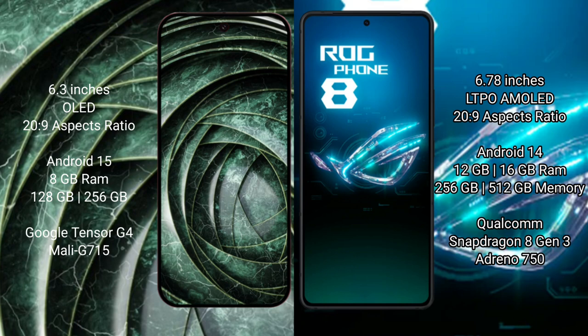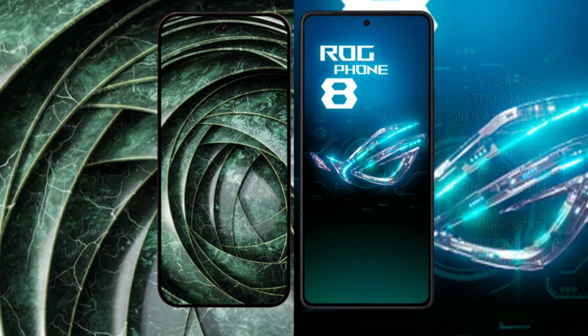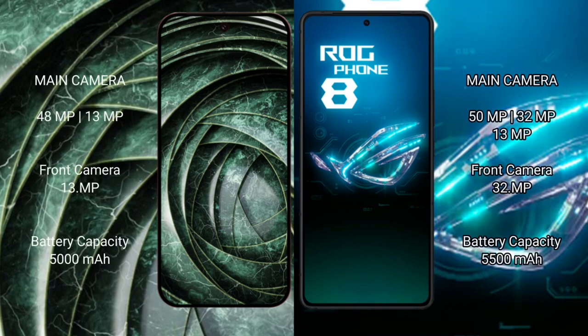The ASUS ROG Phone 8 comes with 12GB or 16GB RAM and 256GB or 512GB of internal storage, powered by the Snapdragon 8 Gen 3 processor. The Google Pixel 9a features a dual camera setup with a 48MP main camera plus a 13MP ultrawide, and a 13MP front camera.